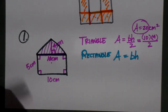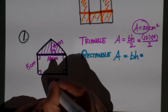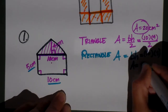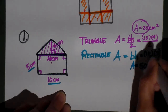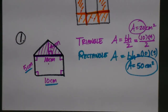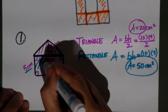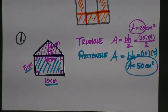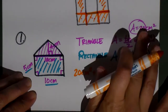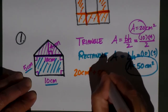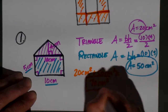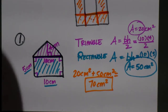Now let's find the area of the rectangle. The formula is base times height. The base is 10 and the height is 5, so the area of the rectangle is 50 centimeters squared. To find the total area for the whole figure, I combine them: the area of the triangle is 20 centimeters squared, the area of the rectangle is 50 centimeters squared, so the total area for this composite figure is 70 centimeters squared.